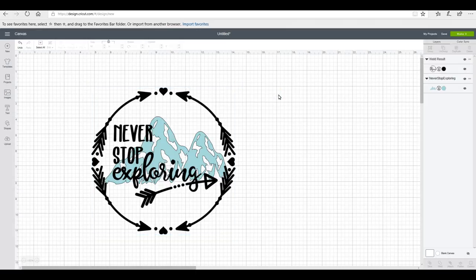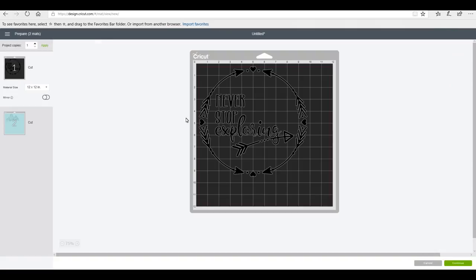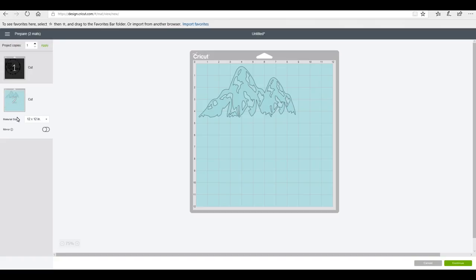That's all I'm going to do to this file. I don't want to do a lot to it. I think it's going to look really effective with the slate and then the etch and then the vinyl. So we're going to go to make it and you can see I've got two mats. I'm going to continue.